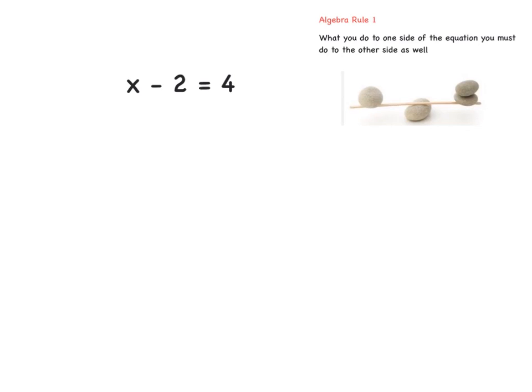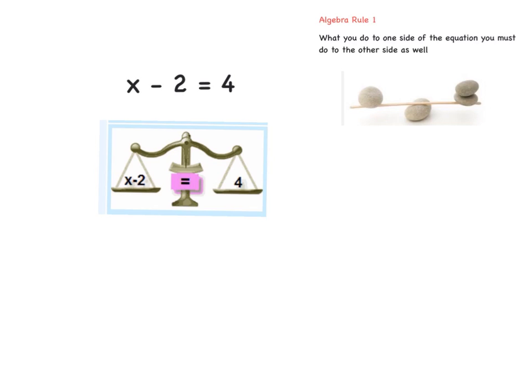Today we'll move on to equations that require more than one step to solve them. But we'll start with one simple easy one. Remember our rule from last class: whatever you do to one side of the equation — this left side — you need to do the same to the right side. So we have an equation x minus 2 equals 4, and this is balance.